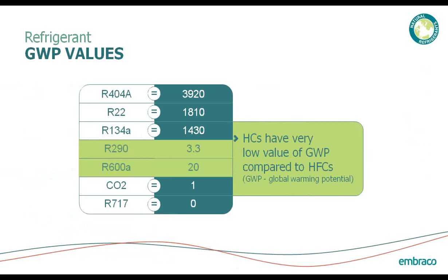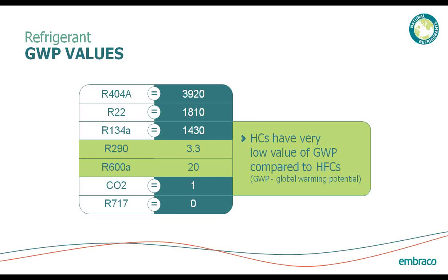Let's go into some GWP values. GWP is defined as the global warming potential relative to one pound of CO2, so one pound of CO2 equals one. Current commonly used refrigerants like R404A are close to 4,000 GWP per pound of refrigerant, and R134A is 1,430. Recent EPA legislation is going to be banning the use of those refrigerants by 2020 because of these high GWPs. One thing to consider is R290, which has a GWP of 3.3, and R600, which has a GWP of 20 — very low values compared to the current HFC refrigerants being used.